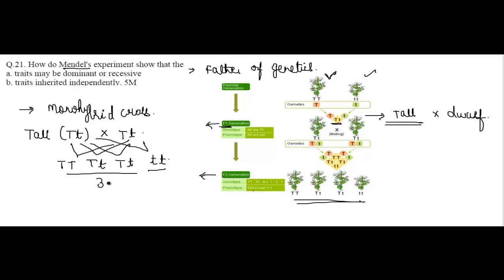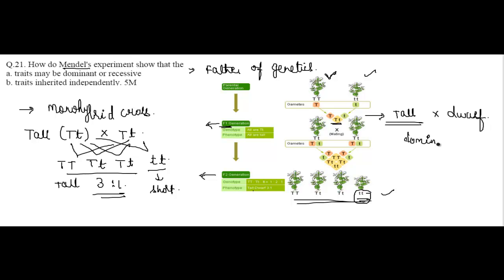The ratio obtained was 3:1 — three tall plants to one short plant. He noted that the dwarf trait of the parent pea plant, which had disappeared in the first generation, had reappeared in the second generation. The dwarf character was visible again in the F2 generation.